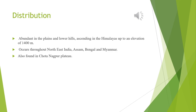Distribution: It is found abundantly in the plains and lower hills throughout North and East India, ascending in the Himalayas up to an elevation of 1400 meters southwards. It extends up to Chhota Nagpur and is very commonly found in the lower hills of Bengal, Assam and Burma.